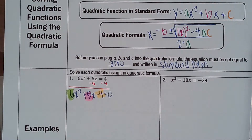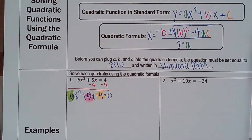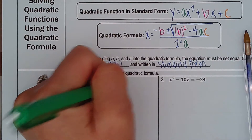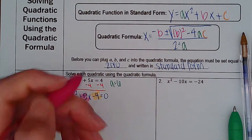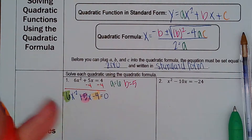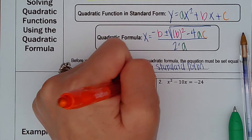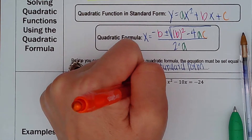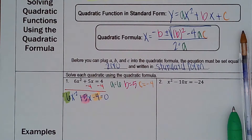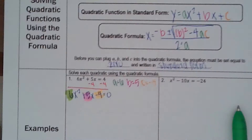What I always like to do is write my a, b, and c up here. I know that a equals 6, I know that b equals 5, and I know that c equals negative 4. I'm going to take those and plug them into the quadratic formula.